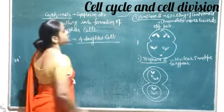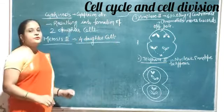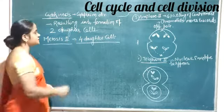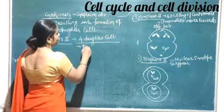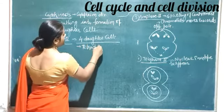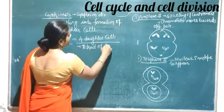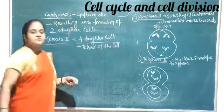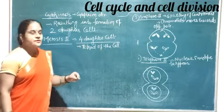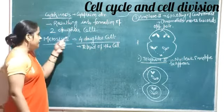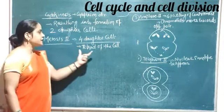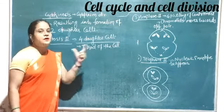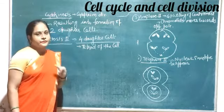When four daughter cells are formed after completion of Meiosis II, this is known as the tetrad of cells. When we complete Meiosis I it forms a dyad of cells, and after the completion of Meiosis II it results in the formation of the tetrad of cells.